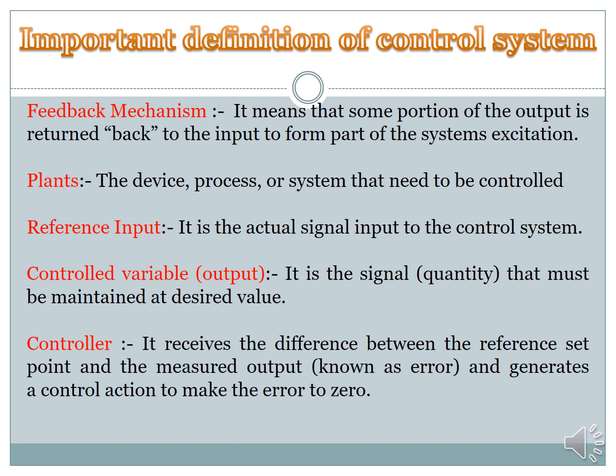Before discussing open loop and closed loop control systems, here are four basic definitions: first is feedback mechanism, second is plant, then reference input, then controlled variable, and the last one is controller.